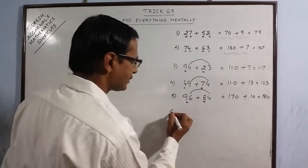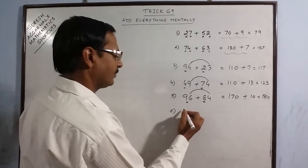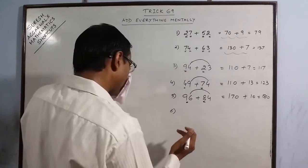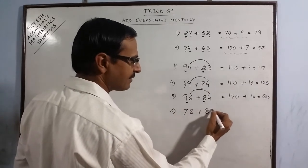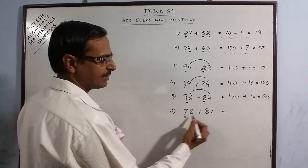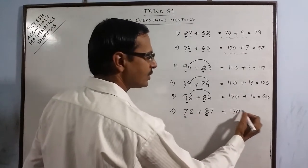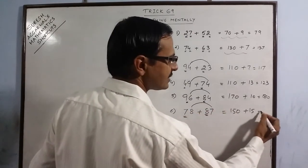More examples. Say I am taking 2 digit numbers only right now. This is 78 plus 87. 7 plus 8 is 15. Put 1 0. 8 plus 7 is 15. 165.